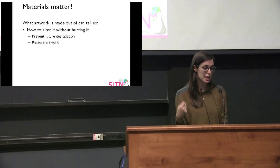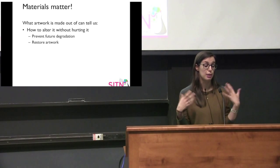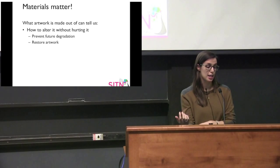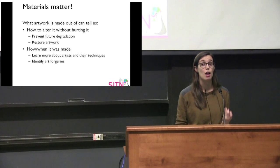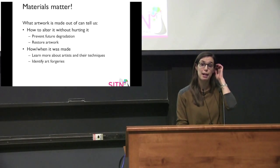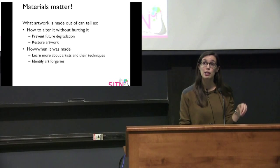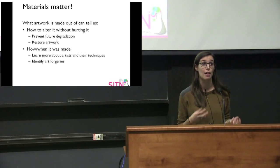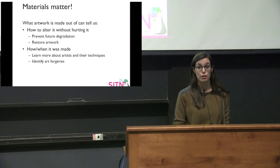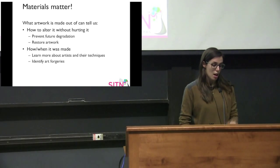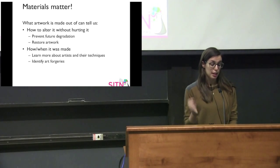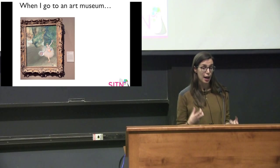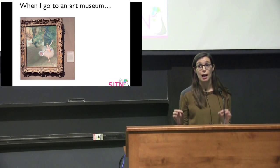If something does happen and we need to restore a piece of art, knowing what it's made out of allows us to do that more effectively. Additionally, looking beyond art restoration, you can actually learn a lot about a piece of art by knowing what it's made out of — whether that's how it was made or when it was made, giving us information about the artist and the techniques they used. It can also be used to identify art forgeries.